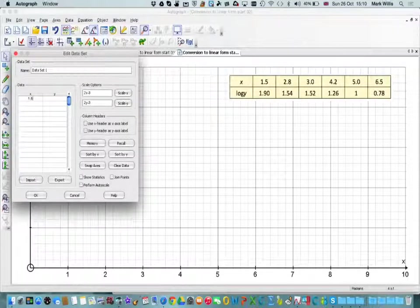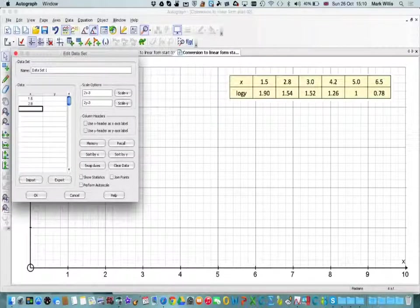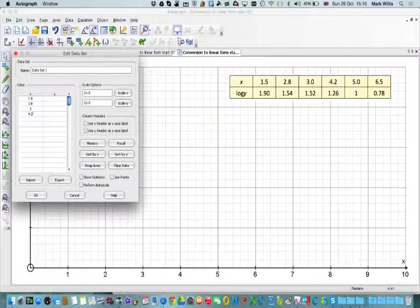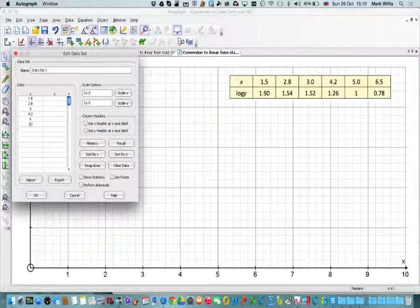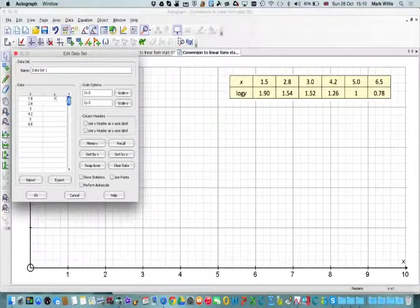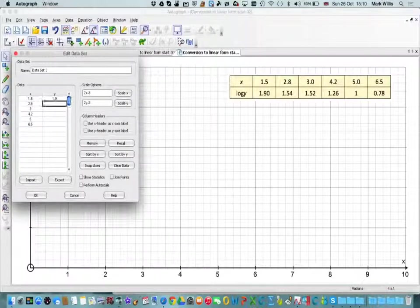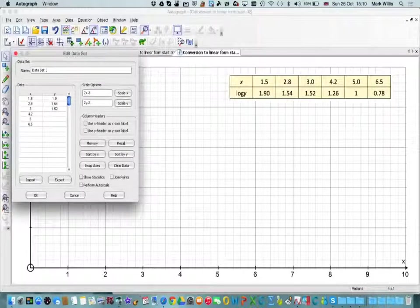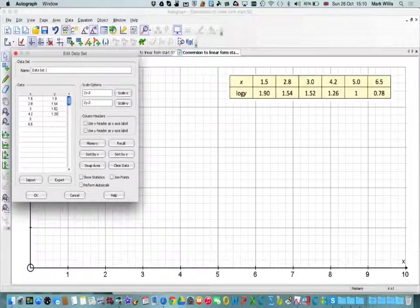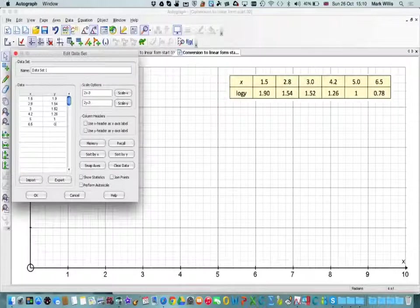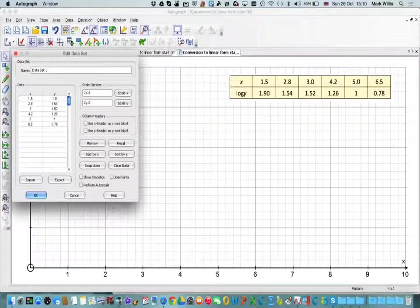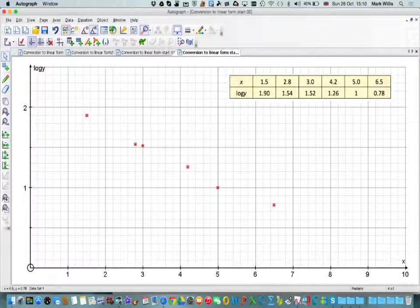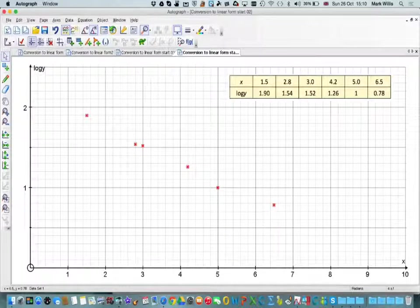Enter the data again: 1.5, 2.8, 3.0, 4.2, 5.0, 6.5 for x. And for log y: 1.90, 1.54, 1.52, 1.26, 1, and 0.78. We press OK and what we see is that these points, I've just changed them to red.